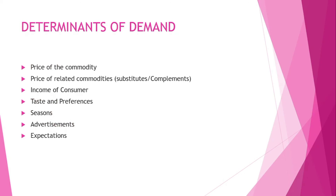Let's look at the determinants of demand. First, we talk about the price of the commodity — when buying the spray, I must consider its price. We also talk about the price of a related good. I should ask myself whether the good has a substitute or a complement. Substitutes are two goods that can replace each other — Milo and Bon Vita are substitutes. Complements are goods that are used together, such as a battery and a phone, or the left shoe and the right shoe.